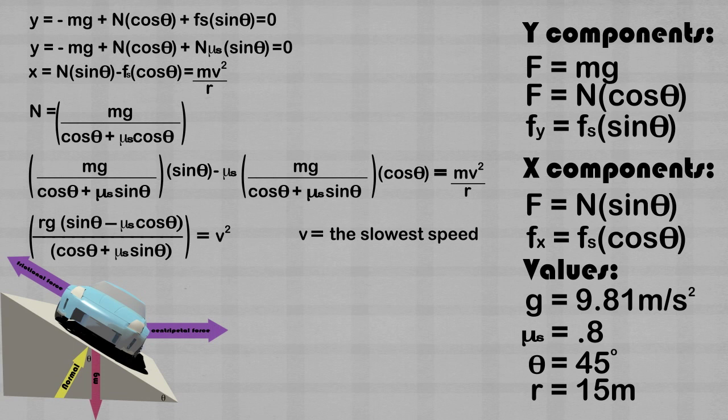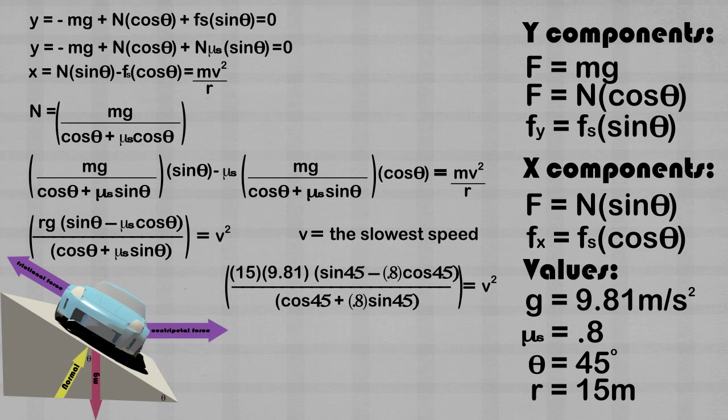Now let's solve for the slowest speed. Plug the values into the equation for the slowest speed. We find that the car has to go faster than 4 meters per second so that it does not fall off the road.